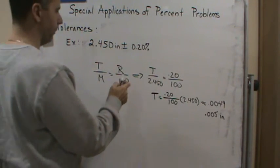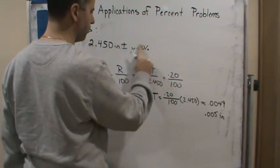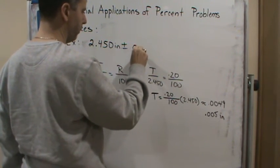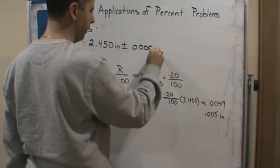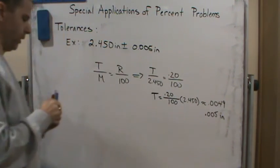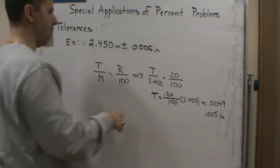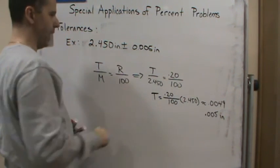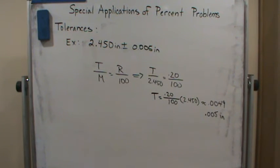So now this is going to be the same as 0.005 inches. So then, now here's the thing: Now I can add and subtract and get my tolerance limits.